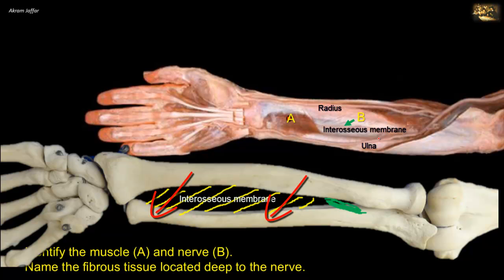The interosseous membrane also transmits forces from the wrist to the elbow via the lower end of the radius. The radius participates in the formation of the wrist joint but the ulna does not. So the interosseous membrane transmits forces from the radius to the ulna, and then to the upper end of the ulna, and then to the humerus.